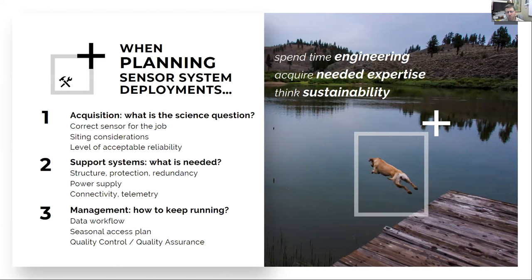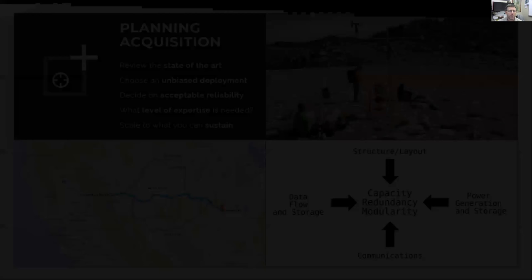Think about management — how to keep it running. What are the tools you'll implement in your data workflow, both for acquisition and for near-real-time visualization, processing, and archiving? What's your access plan — how often will you be able to get out to these sites depending on where they're located? And what are the quality control and quality assurance tools you use to both check the data and continually enter metadata, so that if there are issues you can go back in, or if you're sharing the data, people can evaluate how that observation came to be.